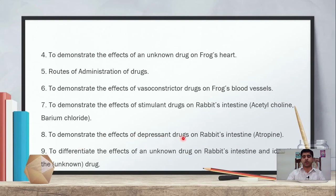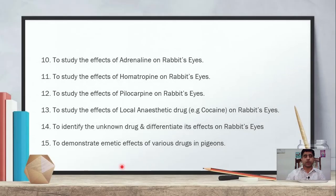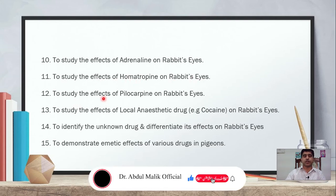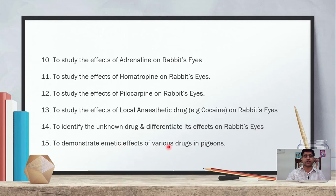Further practicals include: demonstrating effects of an unknown drug on frog's heart; routes of administration of drugs; effects of vasoconstrictive drugs on frog's blood vessels; effects of stimulant drugs such as acetylcholine and barium chloride on rabbit's intestine; effects of depressant drugs including atropine on rabbit's intestine; differentiating effects of an unknown drug on rabbit's intestine; studying effects of adrenaline, homatropine, and pilocarpine on rabbit's eye; effects of local anaesthetic cocaine on rabbit's eye; and demonstrating emetic effects of drugs in pigeons.